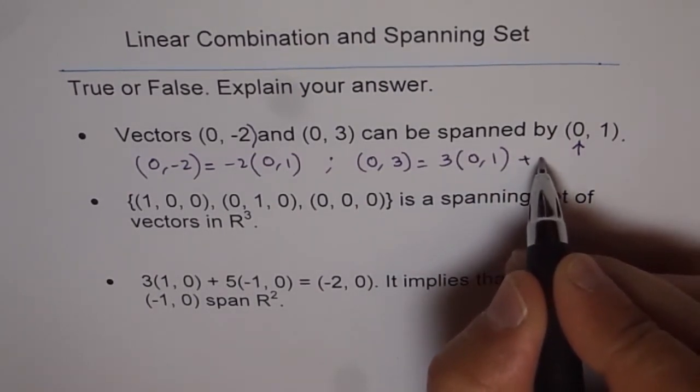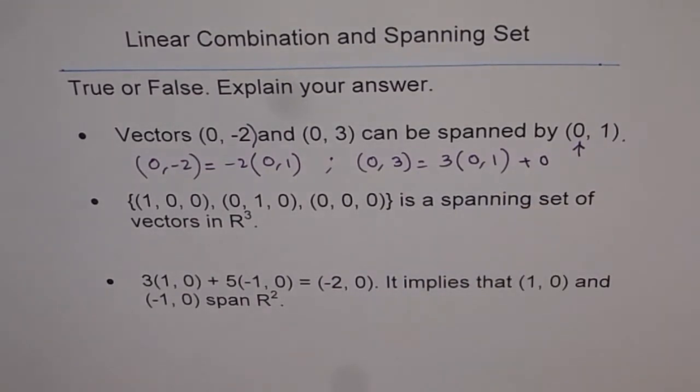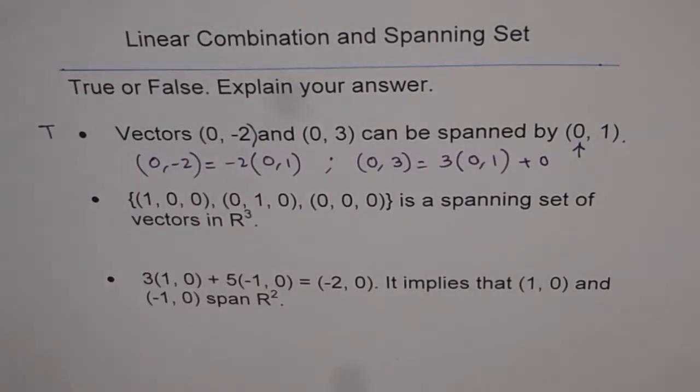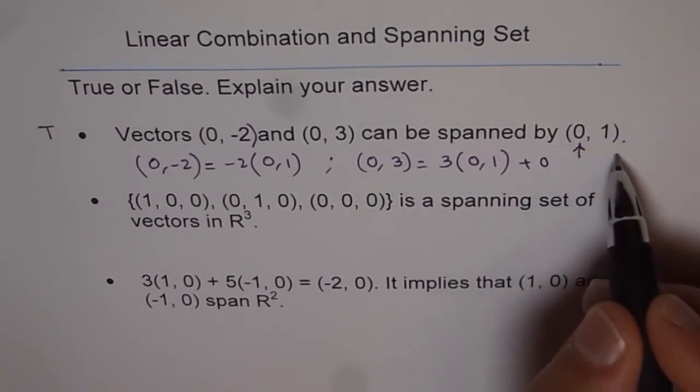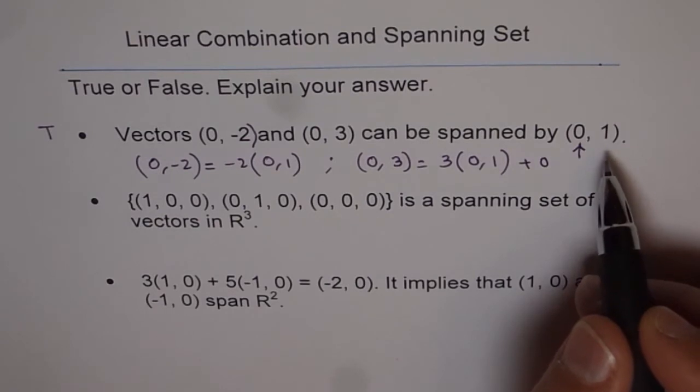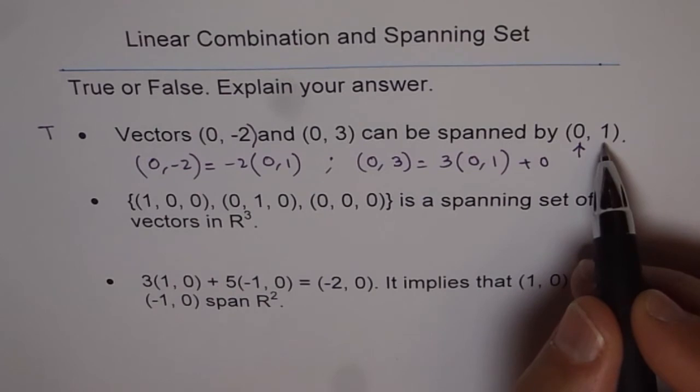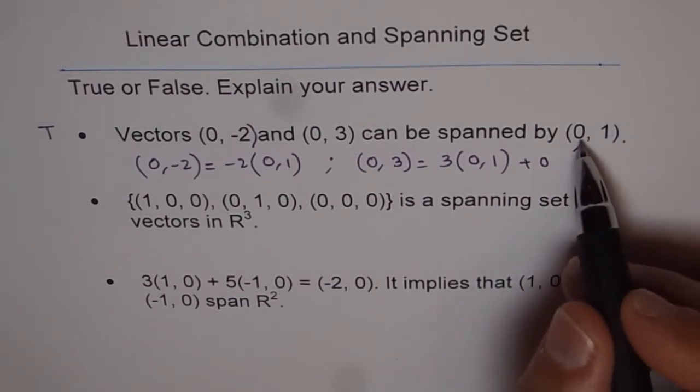You can say the other part is 0. So it is a linear combination. So you can span it and therefore this statement is true. So it is important to note that if you are given only one vector to span with, in that case you can only span those vectors which are in the same line, which are parallel to the given vector. You cannot span a vector like (2,3) because it won't have any component along the x-axis. That is the whole idea.